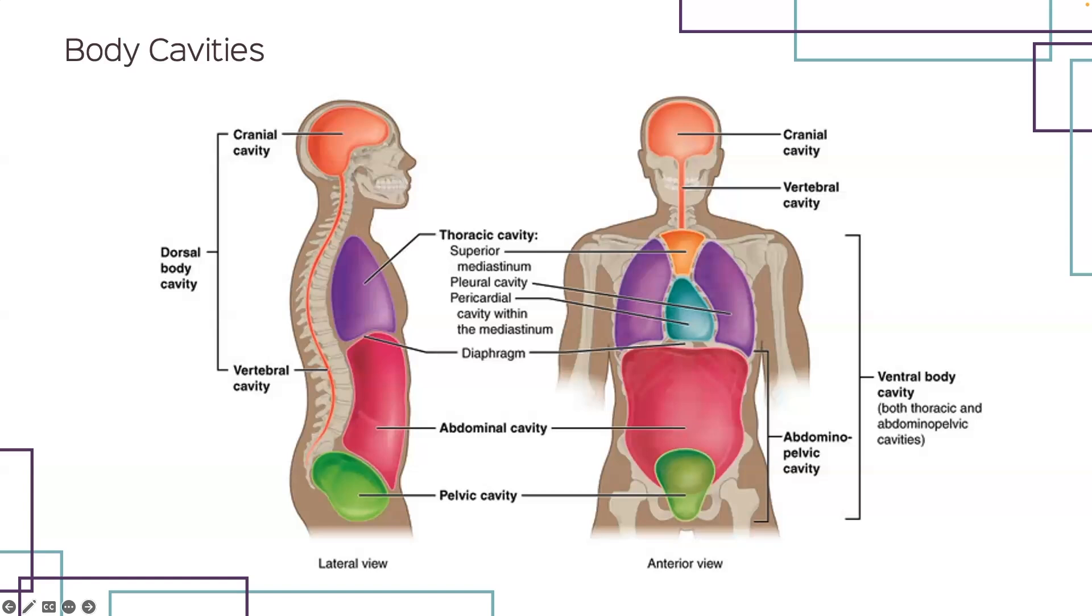Then you have your ventral cavity containing your thoracic cavity and your abdominopelvic cavity. The upper portion is going to contain the mediastinum and your pleural cavities in the thoracic region.